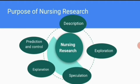The fourth purpose is explanation. Research helps to explain any part, topic, or variable related to nursing. The fifth is prediction and control: to predict something in the future and to control or prevent any problems or health issues, research plays a vital role. These are the five purposes of nursing research.